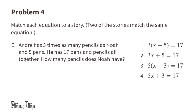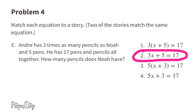Story E: Andre has three times as many pencils as Noah and five pens, with 17 pens and pencils altogether. How many pencils does Noah have? Three times as many pencils is represented as 3x, and the five pens as plus 5, so 3x plus 5 equals 17. Story E represents equation two.